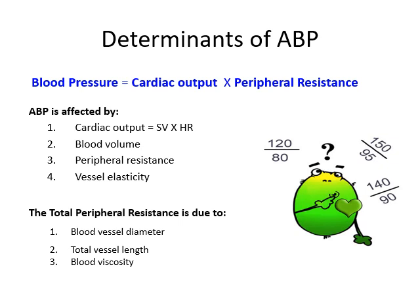Instead of just memorizing the factors, remember the equation: cardiac output times total peripheral resistance. Cardiac output is affected by stroke volume, heart rate, blood volume, and capacitance of the circulation. Total peripheral resistance is affected by blood viscosity, length of the blood vessel, diameter of the blood vessel, and elasticity of the blood vessel.